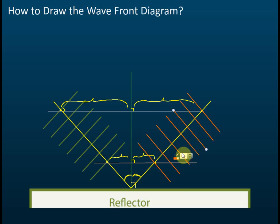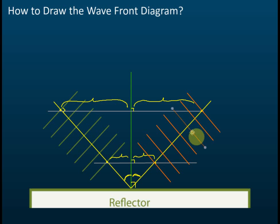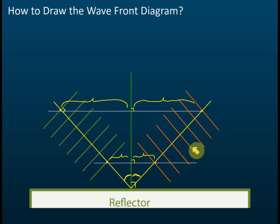Make sure the wavelength — the spacing between wavefronts — is the same as the incident wavefronts. If one is not on the midpoint, adjust it. Make sure the lines pass through the midpoints correctly.